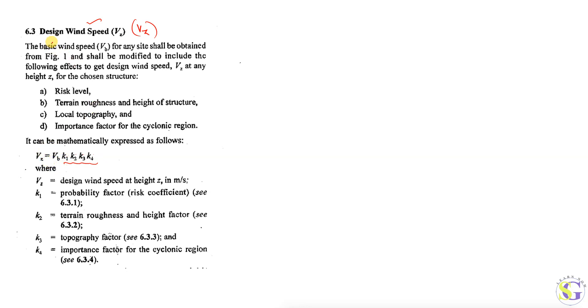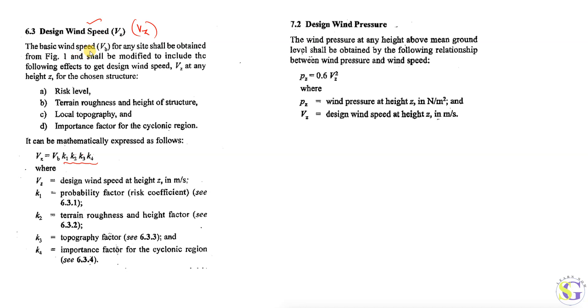Now for the calculations: we want to calculate the design wind speed Vz. The formula is Vz = Vb × K1 × K2 × K3 × K4. We calculate all these values and multiply by the basic wind speed to get the design wind speed. Then we calculate the wind pressure Pz, which is the pressure acting with respect to height. The formula is Pz = 0.6 × Vz².